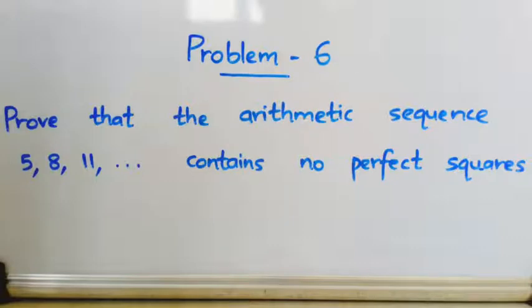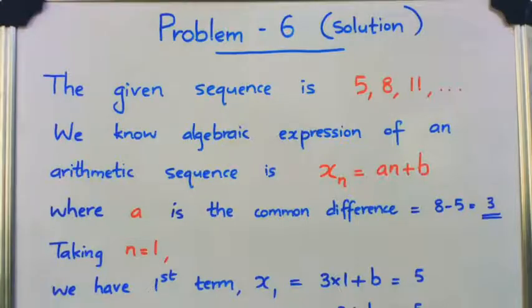We need to prove that this arithmetic sequence has no perfect square terms. First of all, let's find the algebraic expression of this arithmetic sequence. The given sequence is 5, 8, 11, etc. We know the algebraic expression of an arithmetic sequence is xn = an + b.